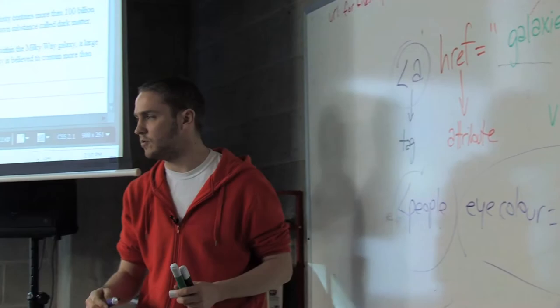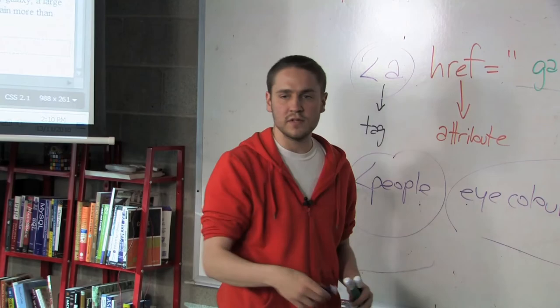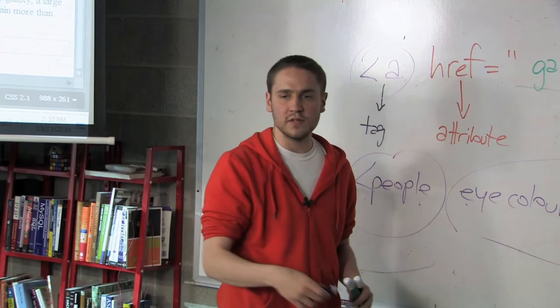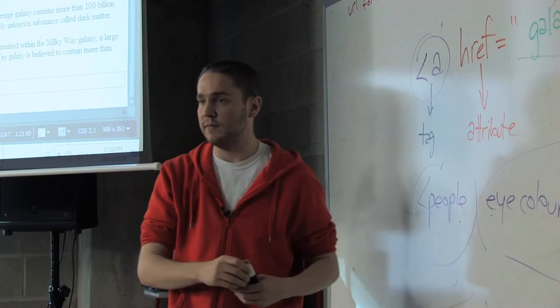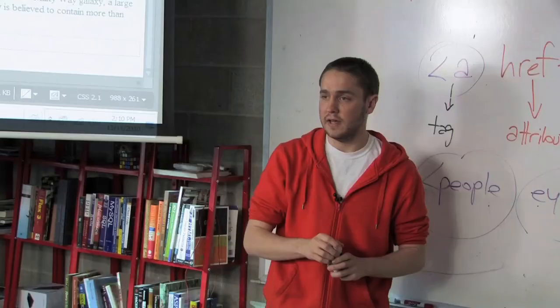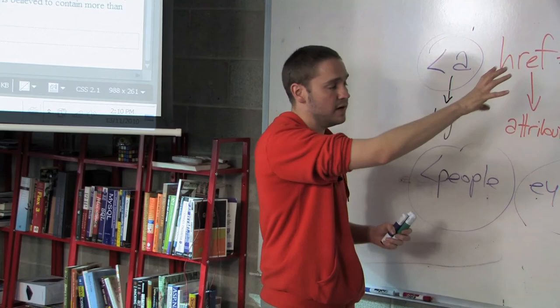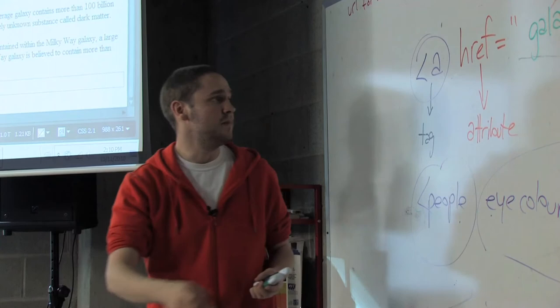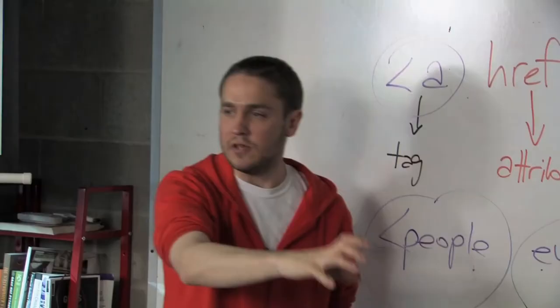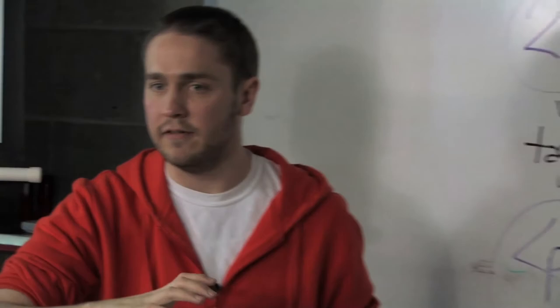There's no limit to the number of attributes and values something can have. Some advanced technologies can use a lot of meta information, and moving forward, a lot of technologies rely on this very structure to do many different things. If you think of a shopping cart, for instance — a shopping cart item would have price equals this, size equals this. There's a lot of attributes and values that anything can have, which is why HTML and related languages are very flexible and very frequently used.